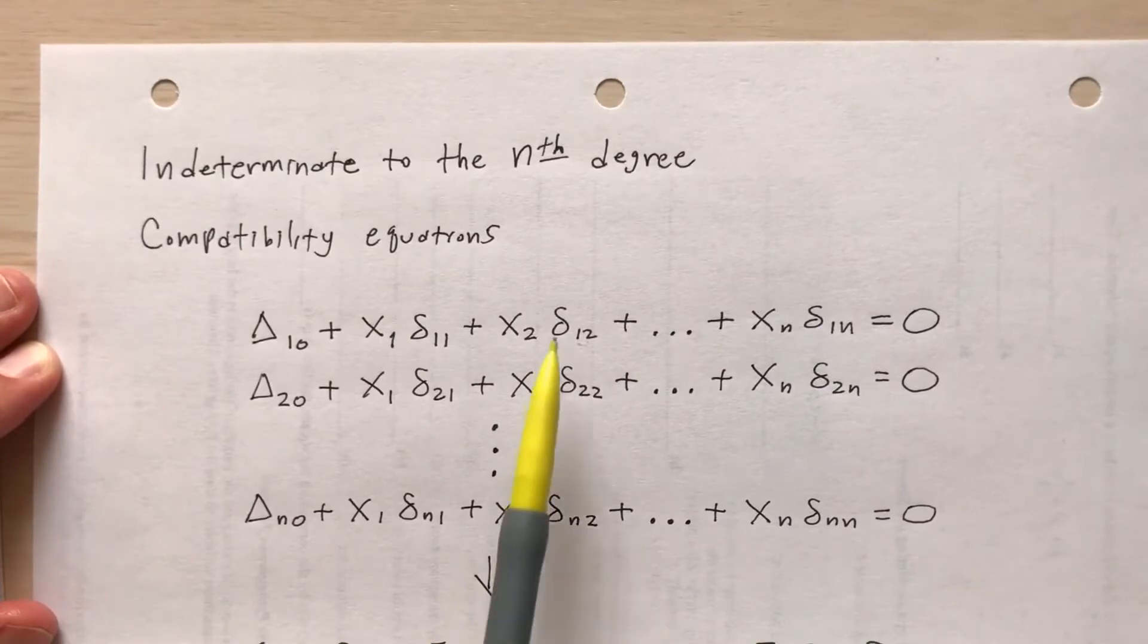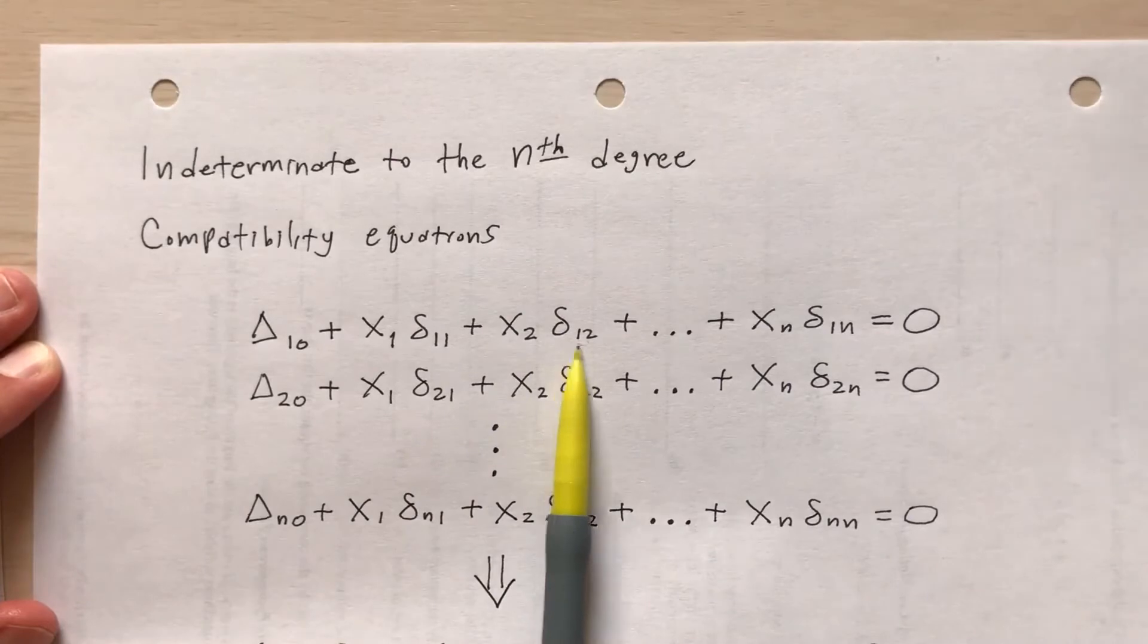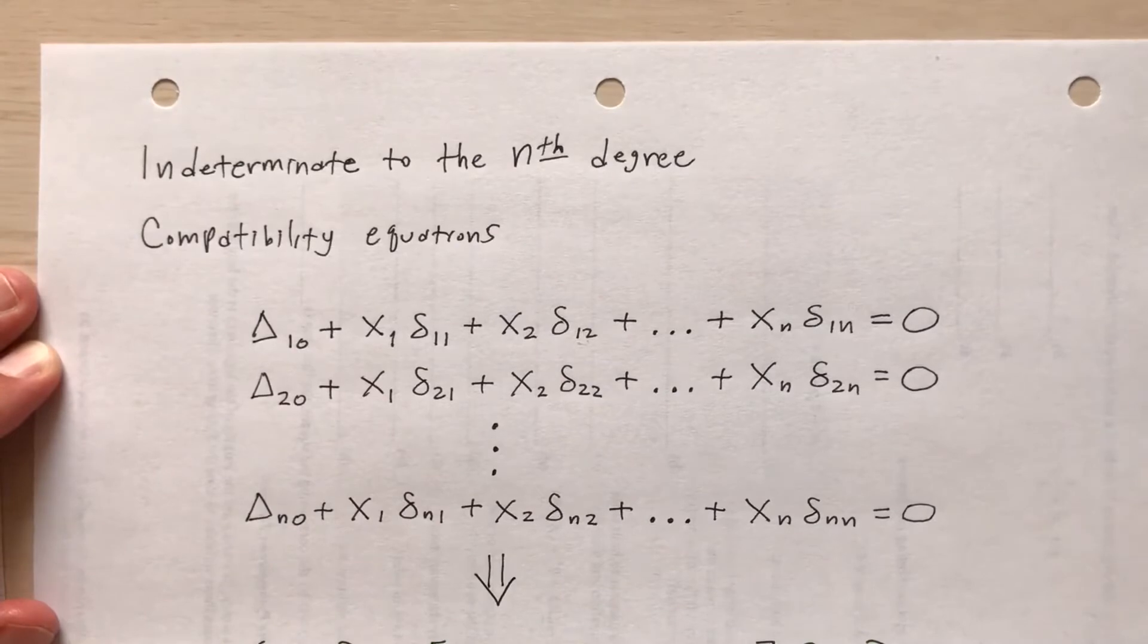The subscripts, delta sub 1,2, for example, this means at point 1 due to the force at point 2. So I've got this system of what look like n equations and n unknowns.